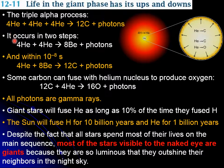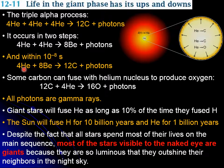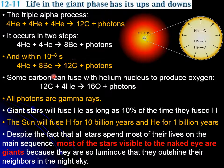This process happens in two steps. First, one helium nucleus collides with another helium nucleus, forming beryllium. Very quickly, either the beryllium breaks back into helium, or it absorbs another helium and forms carbon. That carbon can stay as such, or it can take on another helium and form oxygen.